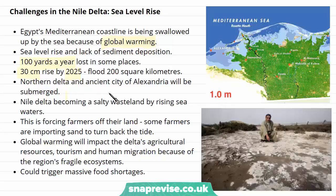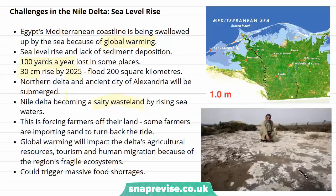As I mentioned before, the northern Delta and the ancient city of Alexandria will be completely submerged by sea level rise. Other side effects will be that the Nile Delta will become a salty wasteland because seawater is salty, and the region relies on fresh water from the River Nile. The land becomes salty and develops a thick salt crust, as we can see here, and no plant life can grow unless specifically adapted to salty conditions — which most crops are not. This is forcing a lot of farmers off their land. Some farmers are importing sand in order to build flood defences and turn back the tide.